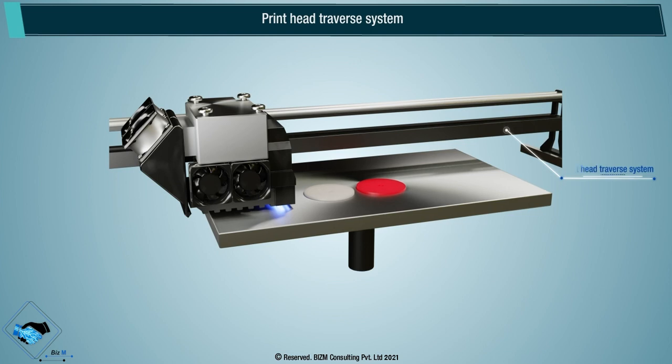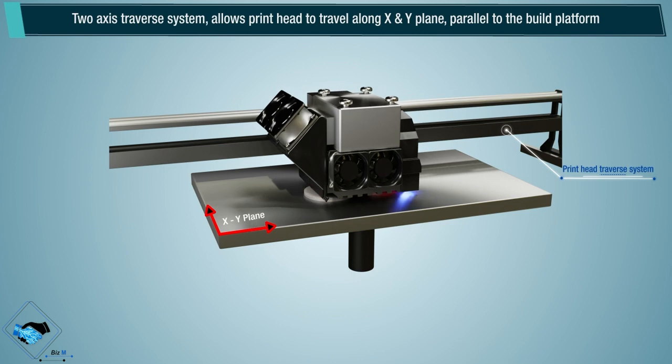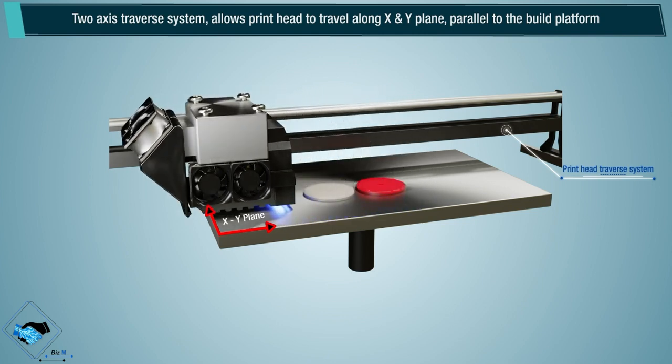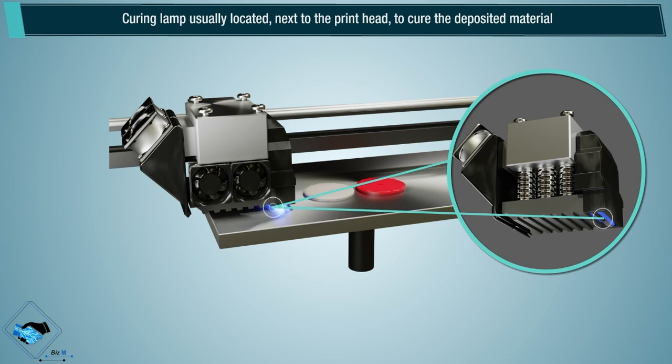Printhead traverse system. Two-axis traverse system allows printhead to travel along X and Y plane parallel to the build platform. UV curing lamp, usually located next to the printhead to cure the deposited material.